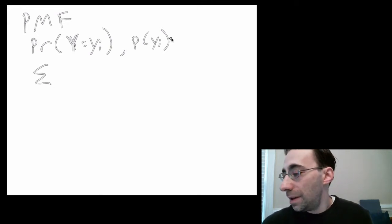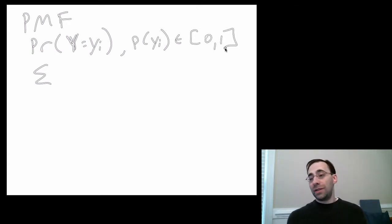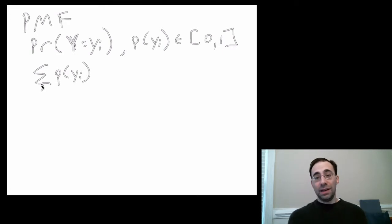It tells you the probability of observing every value in your discrete support. There are a couple of important properties. One is that each probability must be between 0 and 1. A 0 means there's never any possible chance of observing that value, and a 1 means you are guaranteed to observe that value. Second, if you add all these probabilities together, you must get 1. You must draw something from the distribution. That's really it. That defines a probability mass function.